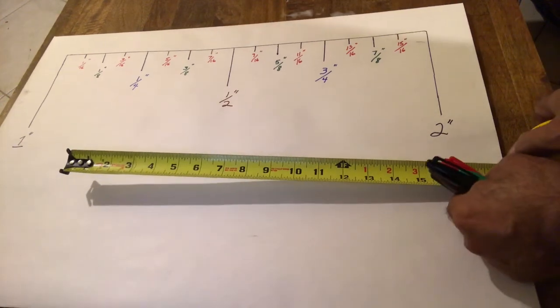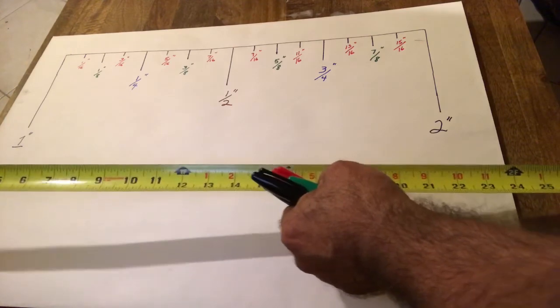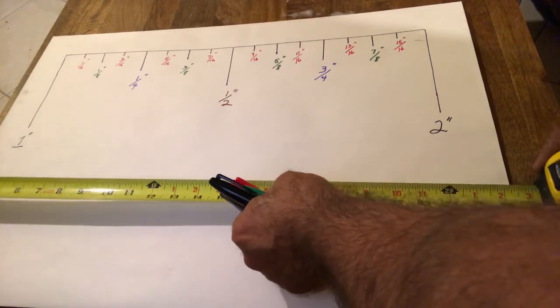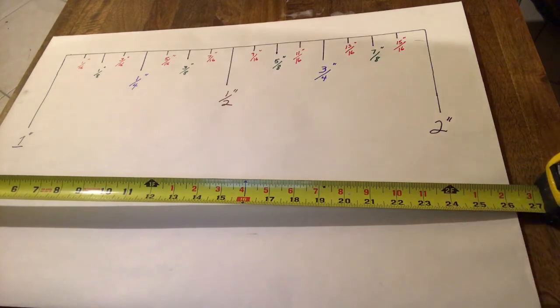And if someone said to you, I want two feet, it's spelled out very clearly. Twenty-four inches is two feet.